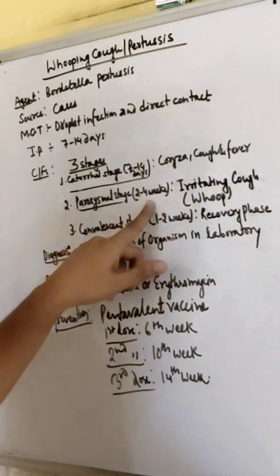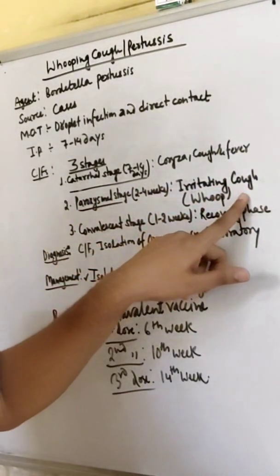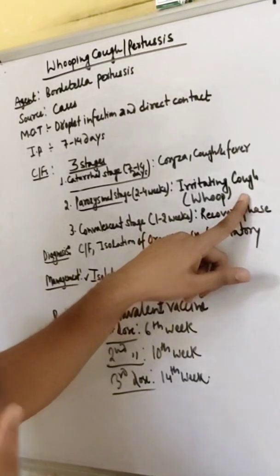Paroxysmal stage, 2 to 4 weeks. Irritating cough, we call it a whooping sound, is produced by the child.